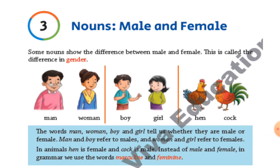In the previous lecture, we have already read names, nouns, naming words, countable nouns, uncountable nouns. Now the third part is nouns, male and female. Some nouns show the difference between male and female. This is called the difference in gender.